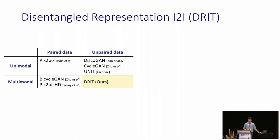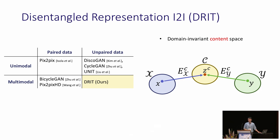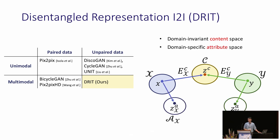Our model combines the advantages of the previous methods and deals with the setting that can generate diverse results with unpaired data. We propose to explicitly disentangle the image representation into a domain-invariant content space and a domain-specific attribute space. We abbreviate our model as DRIT. Note that although some previous work also uses an augmented space, they do not enforce the disjoint of the content and attribute space.